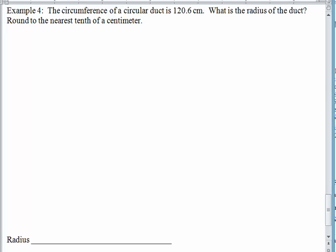Let's see. Our last example. Let's work this one together, because this one's got a little bit to it. The circumference of a circular duct is 120.6 centimeters. We would like to know the radius of the duct, and we'll round the radius to the nearest tenth of a centimeter.